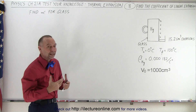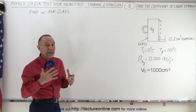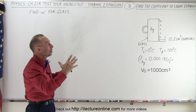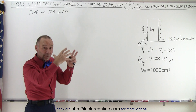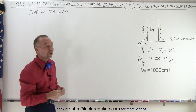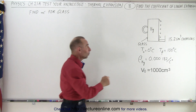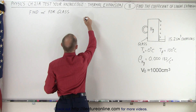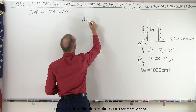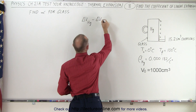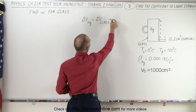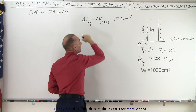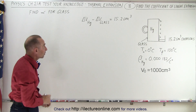Mercury, being a liquid, will expand more quickly than glass for the same change in temperature. This means that the volume of mercury will be greater than the volume of the glass pitcher after both have been heated to 100 degrees centigrade. The difference between the two volumes will have to equal the overflow of 15.2 cubic centimeters.